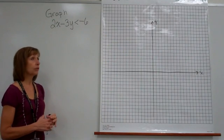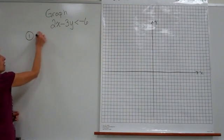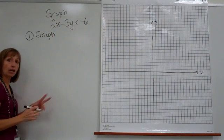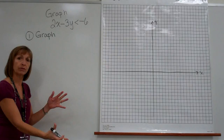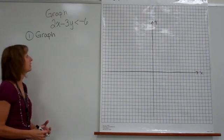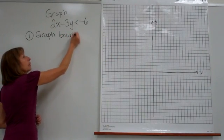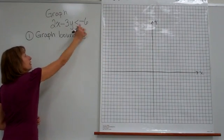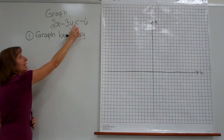To do this, we start off by graphing what's called the boundary. The boundary is the cutoff between the part of the plane that has ordered pairs that make the inequality true and the part where it's not. We can graph the boundary by looking at the original inequality and replacing the inequality symbol with an equal sign.